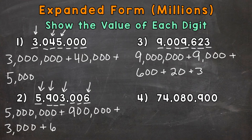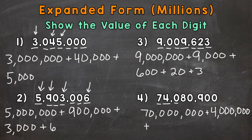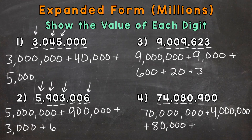And lastly, number 4, we have 74,080,900. We'll start with this 7, which is in the ten millions place, so the value of that 7 is 70 million. Next, we have a 4 in the millions place, so that 4 has a value of 4 million. Then a 0 in the hundred thousands. We have an 8 in the ten thousands, so that has a value of 80,000. Plus a 0 in the thousands. Then we have a 9 in the hundreds, so that has a value of 900. And then a 0 in the tens and 0 in the ones. So we are done with number 4.